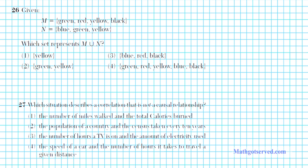So for 26 it says, given that M is green, red, yellow, black, and set N is blue, green, yellow, which set represents M union N? This U right here is a notation in sets used to carry out an operation on sets. That U basically means union.